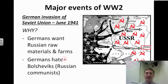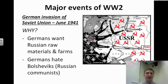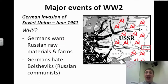Germany is defeated in Britain but is not done yet. They invade the Soviet Union to the east in June 1941. Here the swastikas show all of the land the Nazis have taken as they head toward the Soviet Union. The Germans want Russian raw materials and farms, and they also hate the Bolsheviks, the Russian communists.